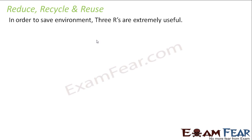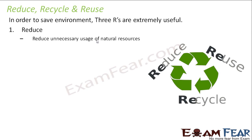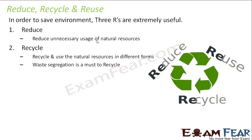In order to save the environment, the three R's are extremely useful. The first one is reduce — we should reduce the unnecessary usage of natural resources. We should make sure that we do not waste any natural resource, because they are limited and the needs are unlimited, so we have to prevent the wastage of natural resources.